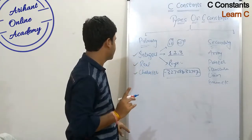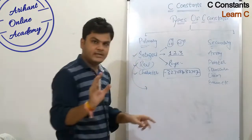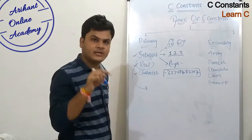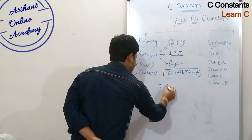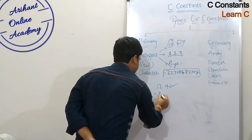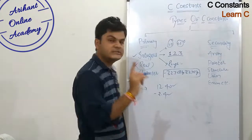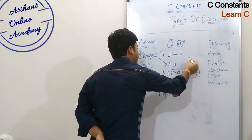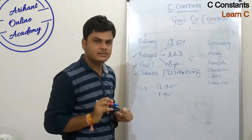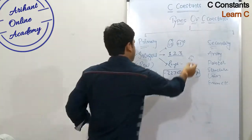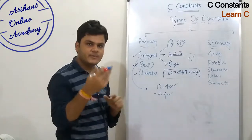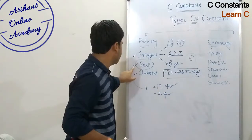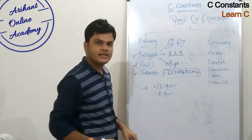After that, let's discuss real constants. The rule for real constants is that they must contain a decimal point — like 12.40, which is a real constant, or minus 2.4, which is also a real constant. If there is no sign mentioned, the value is considered positive by default. Real constants can be either positive or negative.